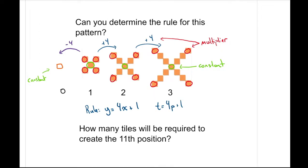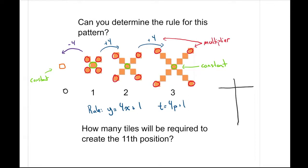Additionally, if you don't like the visual pattern, you can always create a table very similar to our input and output table. Position number and tiles: 1, 2, 3 and then we have 5, 9, 13. We can see that it's increasing every time by 4, which again tells us our multiplier is four. And if we work backwards in this pattern to position zero, we get a value of one, which is our constant.